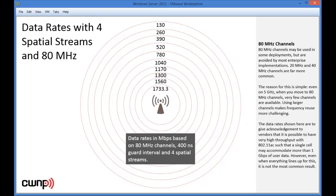Now let's look at a totally fictitious, not practical scenario: an 80 MHz channel, four spatial streams, 400 ns guard interval — possible with a wave 2 AP. This takes us up to 1733.3 Mbps max, falling to 1560 and 1300, staying above 1 Gbps until the fifth data rate where we drop to 780. This makes it look like we definitely need that faster uplink — but again, you need clients that support four spatial streams, and you need to actually be running 80 MHz channels.